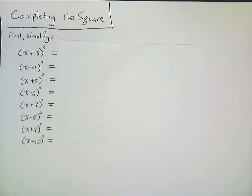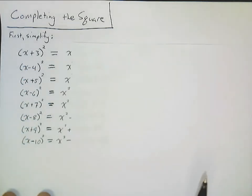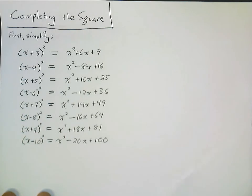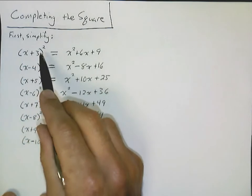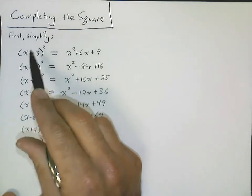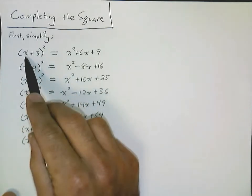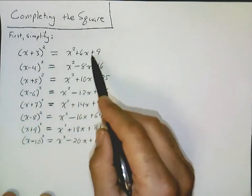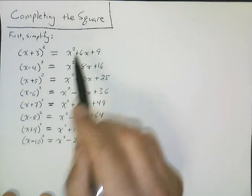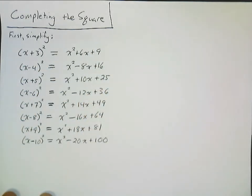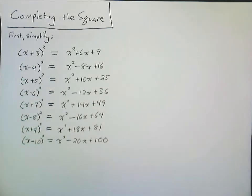Okay, so let's see here. You should have gotten these expressions. Now, if any of you tried to distribute the square into the sum and said this was x squared plus 9, and completely lost this linear term here, kick yourself in the shins repeatedly and then go back and work through it again. You have to use the distributive property three times in each of these and then combine the like terms.